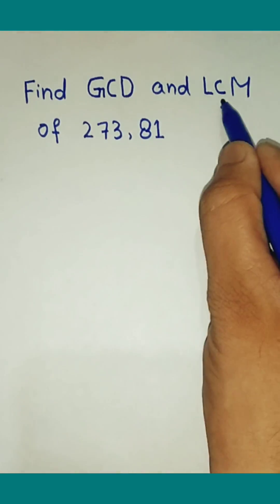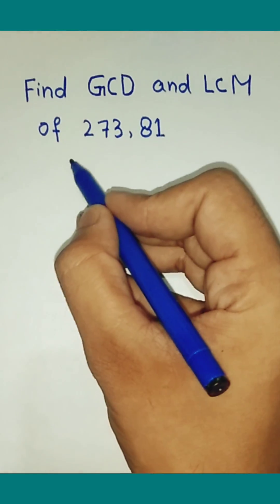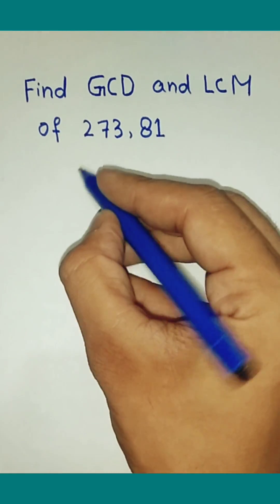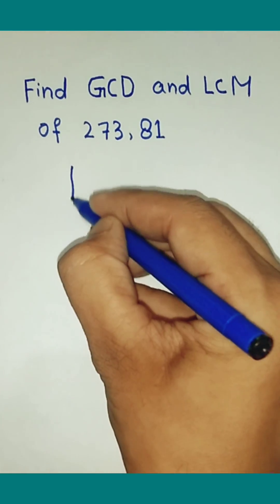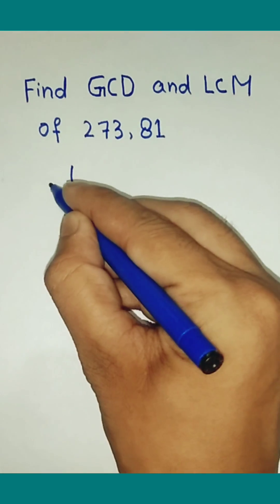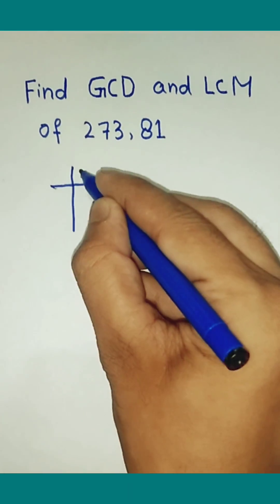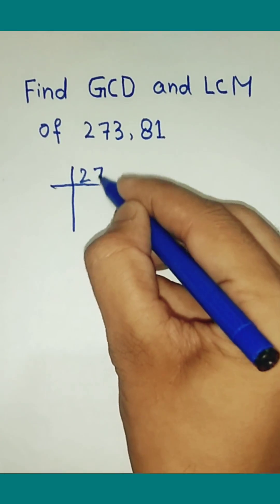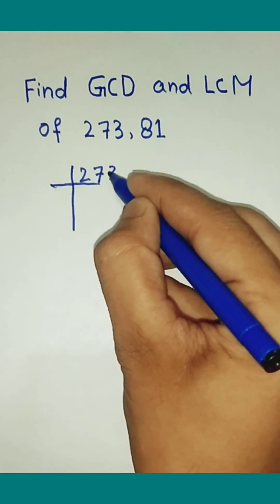Find GCD and LCM of 273 and 81. We start with 273.